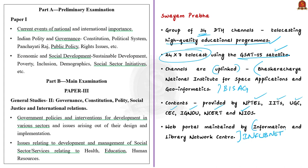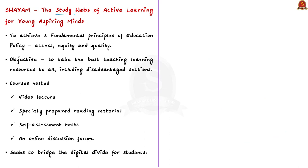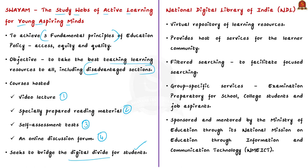Swayam — Study Webs of Active Learning for Young Aspiring Minds — is a Government of India program designed to achieve the three fundamental principles of education policy: access, equity, and quality. It aims to take the best teaching and learning resources to all, especially disadvantaged sections of the population. Courses on Swayam are in four parts: video lectures, specially prepared downloadable reading material, self-assessment tests and quizzes, and an online discussion forum. In short, Swayam seeks to bridge the digital divide for students previously untouched by the digital revolution.